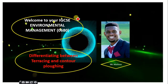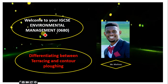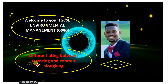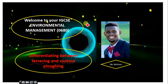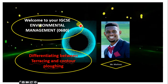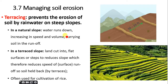Many students have been complaining because they have issues differentiating between terracing and contour plowing in relation to management of soil erosion. This is the reason for this particular video on environmental management. Your syllabus content 3.7, on chapter 3, has to do with managing soil erosion. We're going to look at some of those strategies, but we'll pay close attention to terracing and contour plowing so you'll be able to differentiate them in exams.